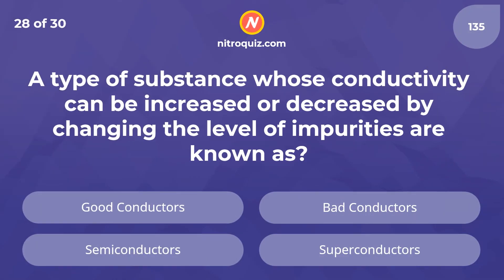A type of substance whose conductivity can be increased or decreased by changing the level of impurities is known as? Answer is Semiconductors.